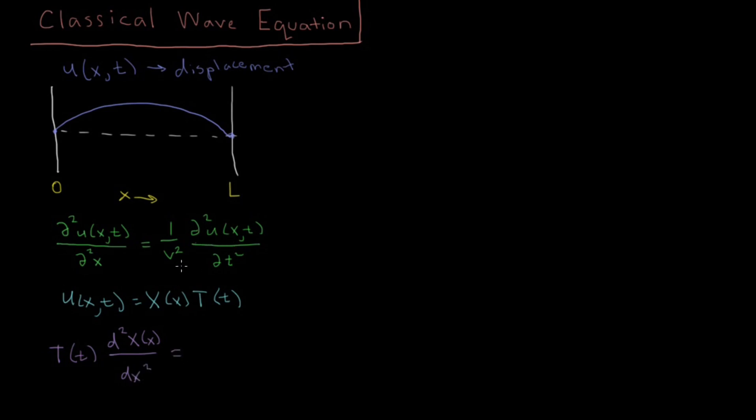Then over on this side, applying the same logic, if we substitute in u of x, t for these two separate functions here, we're going to see that this x part doesn't depend on t. So when we differentiate with respect to t, we can just pull the x out, and we get the x function over v squared times, and then once again, this t is being differentiated with respect to time, and it only depends on time, so this is no longer a partial derivative, this is now an ordinary derivative. So d squared T(t) dt squared.